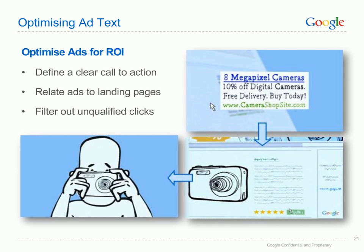Optimising ads for ROI means attracting clicks from Google users willing to take action. Define a clear call to action — a clear call to action is especially important if your goal is to maximise your return on investment. Guide a customer on what to do once they reach your site. The call to action should reflect the action that you consider a conversion, whether it's a sign up, a request for more information or an actual sale. Especially for ads on the display network, a good call to action will set the right expectation for users in various stages of the buying cycle. Relate ads to their landing pages: the destination URL you choose for each ad should directly relate to the product or service described in your ad. For example, if a retailer's ad highlights apartments for sale in London, the ideal landing page may feature all available apartments for sale in London rather than the retailer's homepage. Customers are much more likely to buy if they don't have to search your website for what they're looking for.